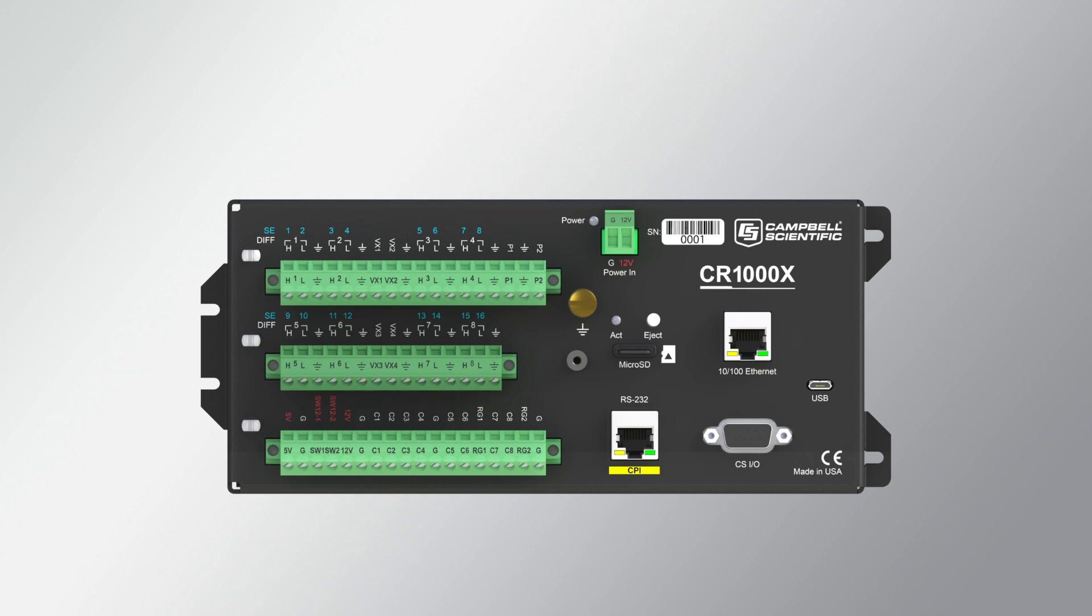Some models of data logger, like the CR1000X, have one or more resistive ground terminals labeled RG. RG channels connect to the ground plane through a 100 ohm resistor. This type of ground is used for non-isolated 0 to 20 milliamp or 4 to 20 milliamp current loop measurements. It is also used for decoupling ground on RS-485 signals to improve communications.